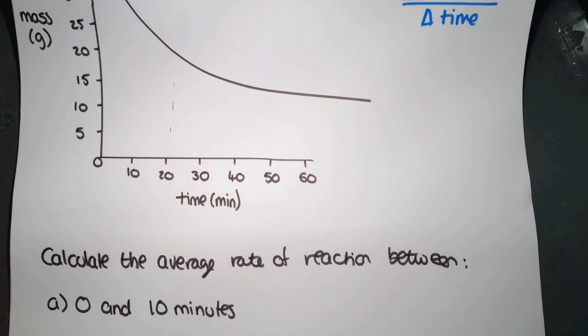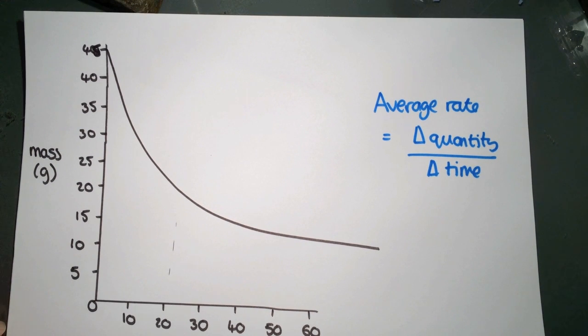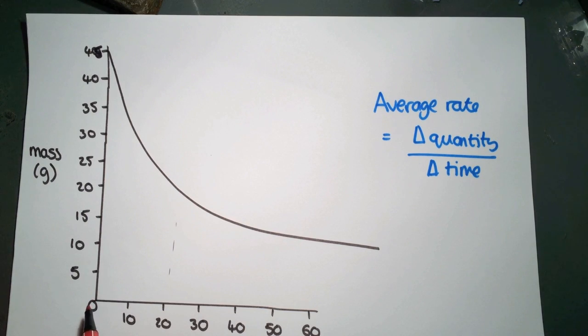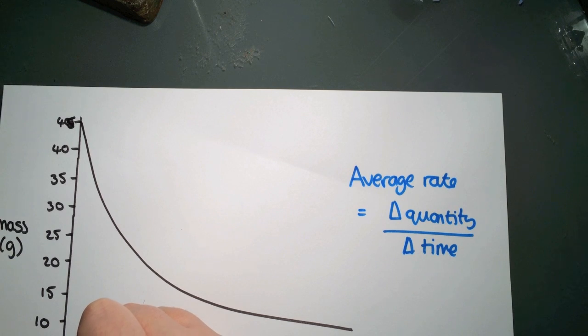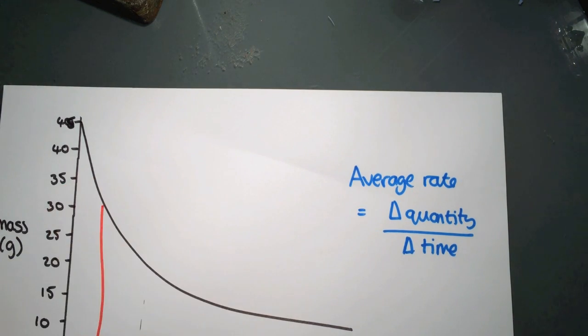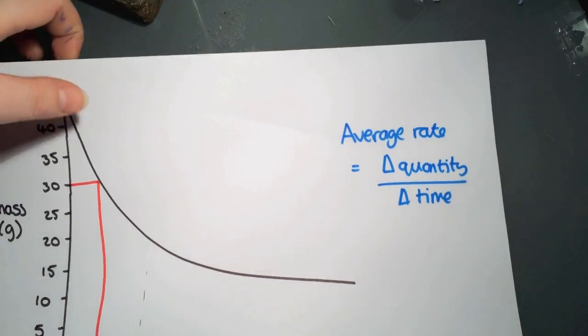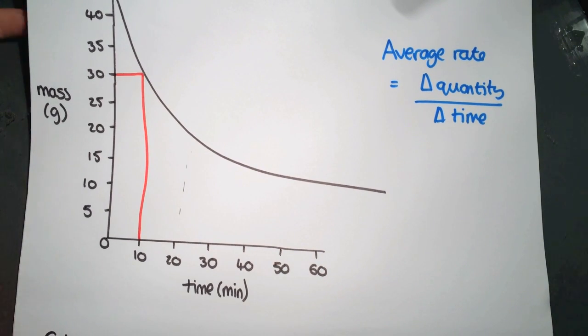So calculate the average rate between 0 and 10 minutes. So onto the graph, you need to draw in where the 0 and the 10 minutes are. So 0 is here, and it's given off 45 as our mass. And then 10 minutes. So you need to trace the line up from 10 until it hits your graph. And then you need to trace the line across. So here we can see that at 10 minutes, we've got a mass of 30.